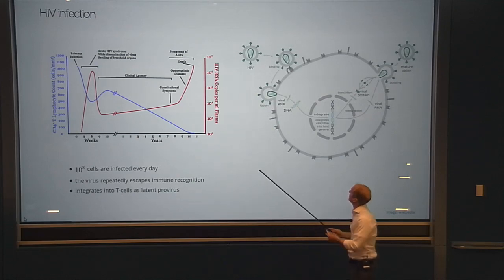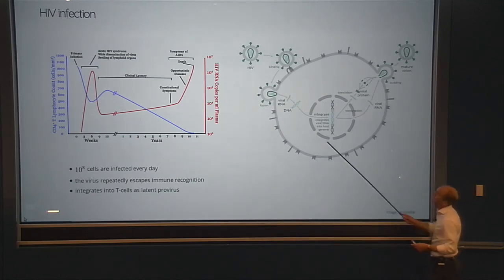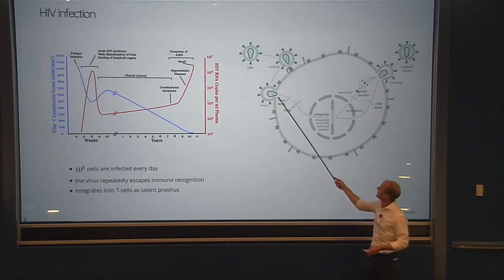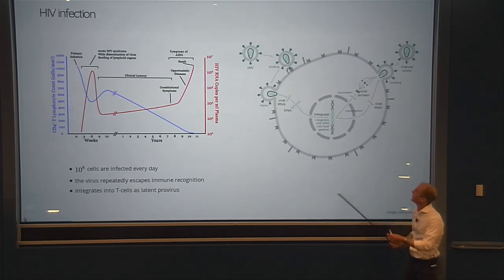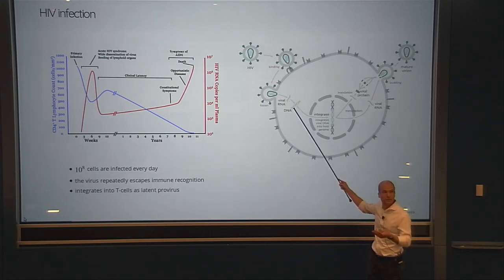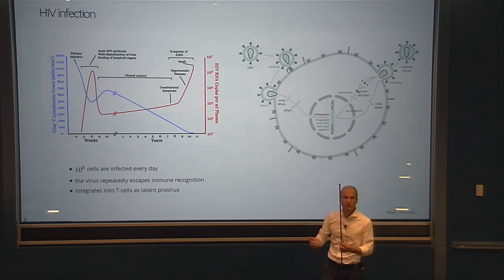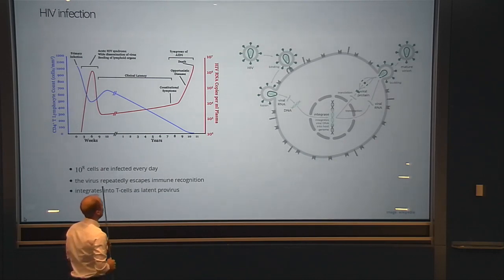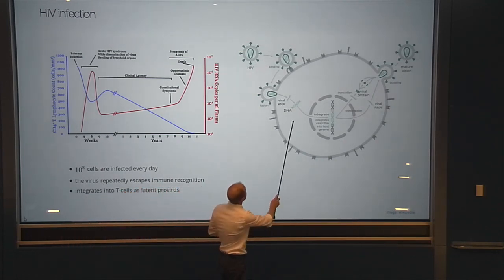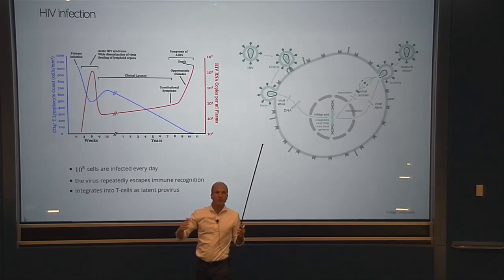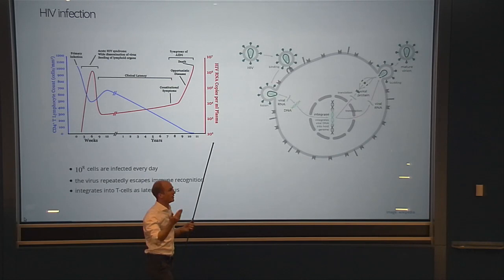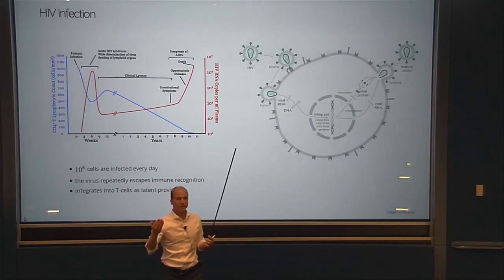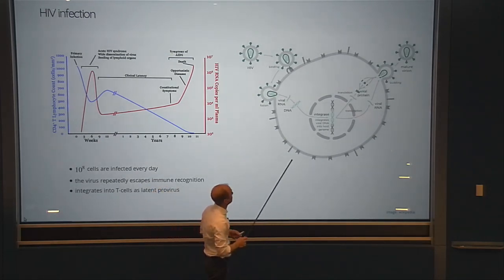Whenever the virus infects a cell, the virus binds to the cell surface, the genome inside the capsid is injected, and the reverse transcriptase makes a copy of the RNA genome into DNA. That's where mutations happen — this RNA-dependent DNA polymerase is rather error-prone, making a mistake roughly every 10,000 to 100,000 bases. These mistakes keep accumulating over time and allow the virus to change and respond to immune surveillance.